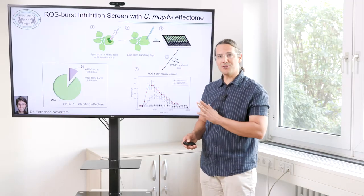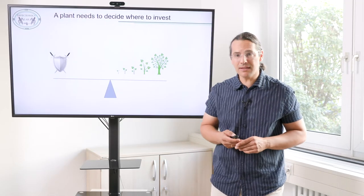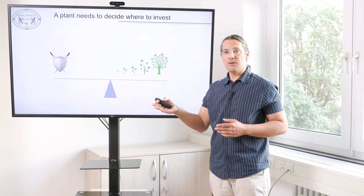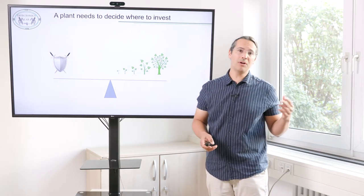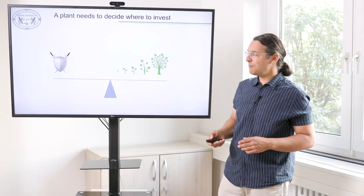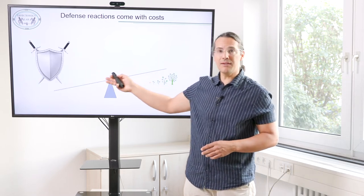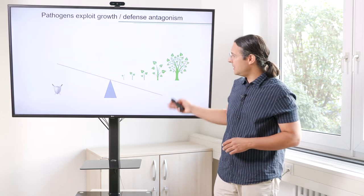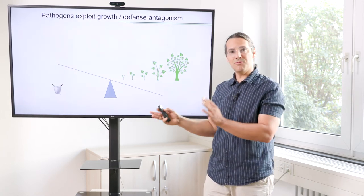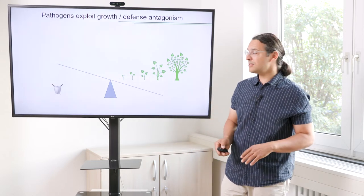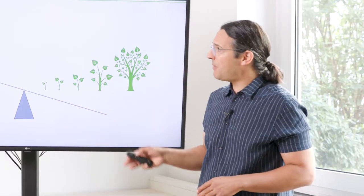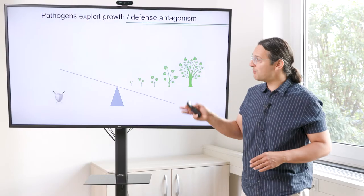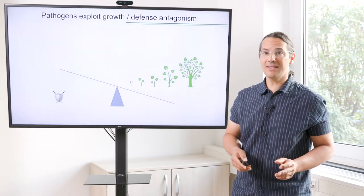This is one part of the story, and I would like to explain a second concept. Plants must continuously make the decision between defence or growth. If a plant strengthens its defence, it comes at the cost of its growth potential. Conversely, if the plant decides to invest resources into growth, it's usually at the cost of defence. Pathogens exploit this antagonism within the plant by promoting growth in order to suppress defence signalling.